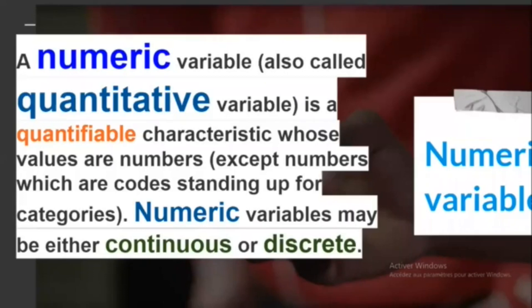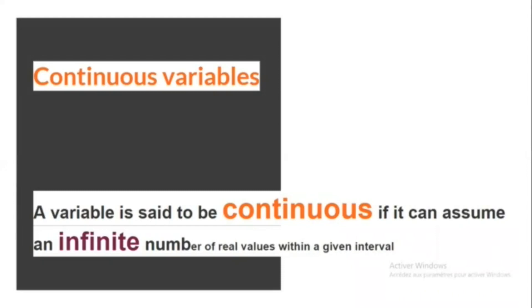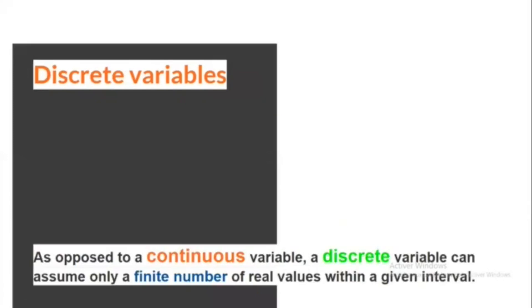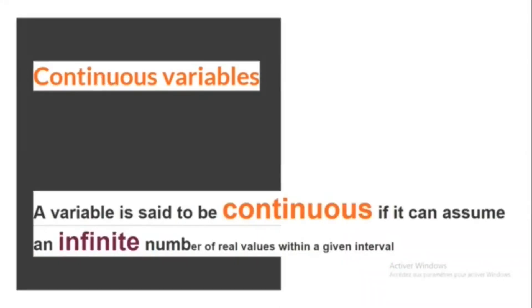Numeric variables: a numeric variable, also called a quantitative variable, is a quantifiable characteristic whose values are numbers, except numbers which are codes standing in for categories. Numeric variables may be either continuous or discrete. A variable is said to be continuous if it can assume an infinite number of real values within a given interval. For instance, consider the height of a student — it can't be negative and can't be higher than three meters, but between zero and three the number of possible values is theoretically infinite. A student may be 1.6321748755 meters tall. In practice, the measurement instrument will restrict precision; the reported height would be rounded to the nearest centimeter, so it would be 1.63 meters.